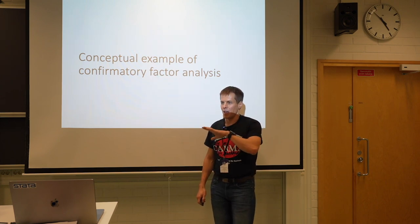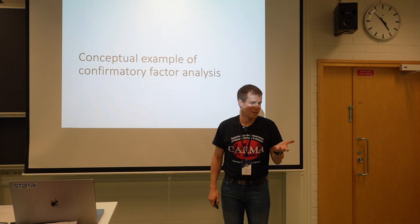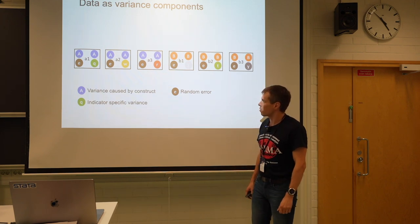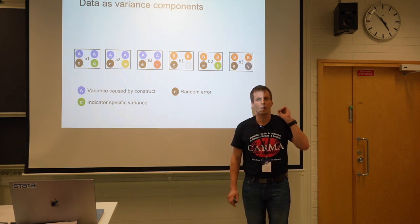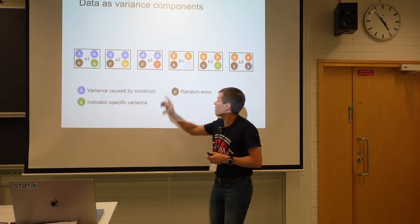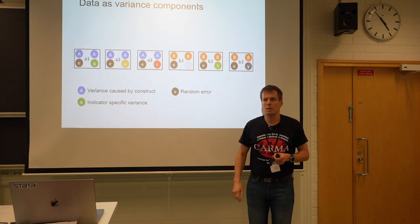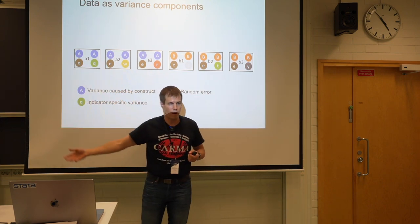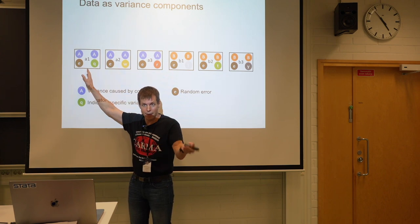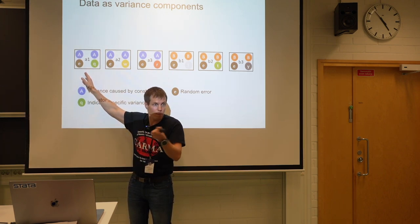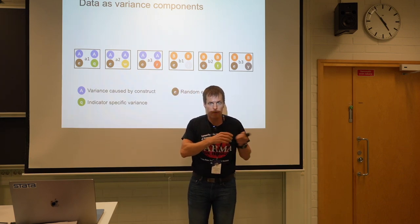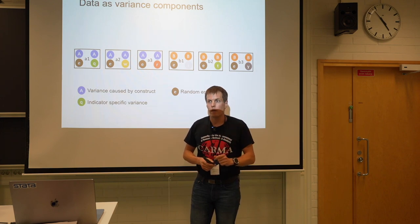This set of slides is from Todd Little, who is the person who got me to actually understand what factor analysis is. Let's assume we are measuring two things — A and B — with indicators A1, A2, A3 measuring A and B1, B2, B3 measuring B. Each circle represents a source of variance: items vary because people vary in the underlying construct — height measures vary because people vary in height, intelligence measures vary because people vary in intelligence.